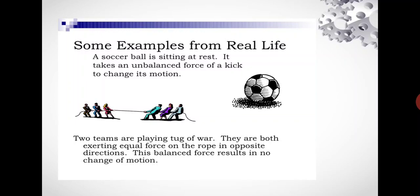They are both exerting equal force on the rope in opposite directions. This balanced force results in no change of motion.